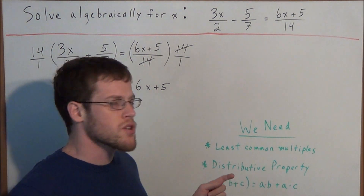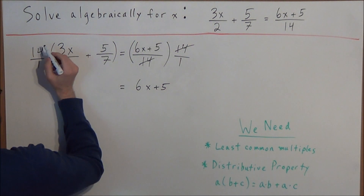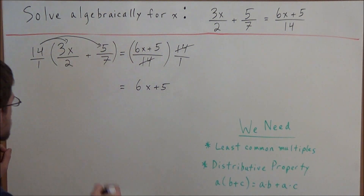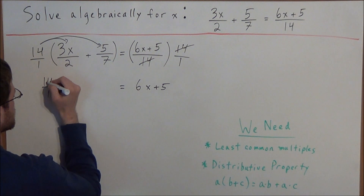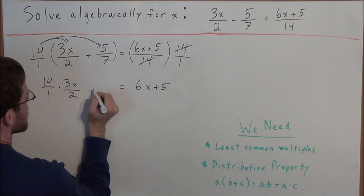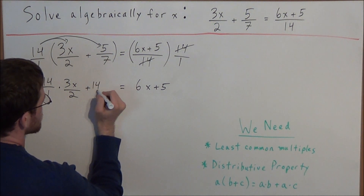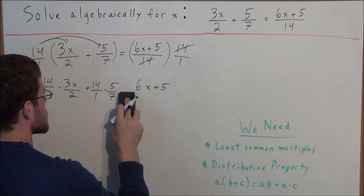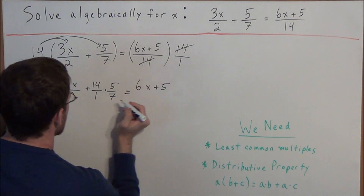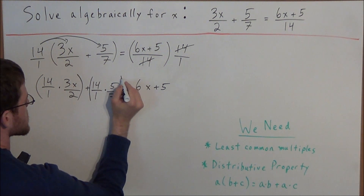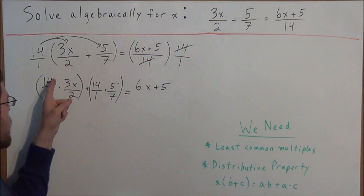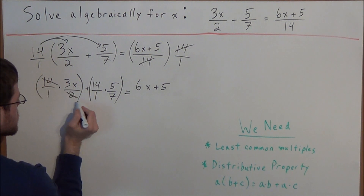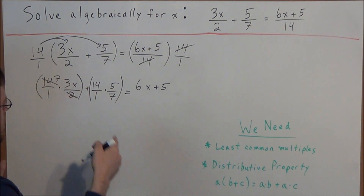Now we're going to use the distributive property to take care of the left-hand side of this equation. So we're going to multiply 14 times 3x over 2, and 14 times 5 over 7. For the first term, written as 14 over 1 times 3x over 2: we have a 14 in the numerator and a 2 in the denominator. Since 14 divided by 2 is 7, we can cross off 14 and 2, and replace 14 with 7.